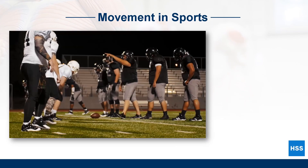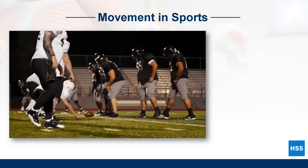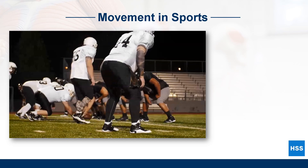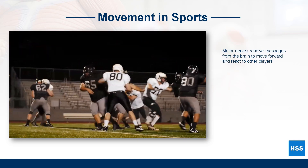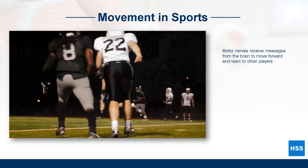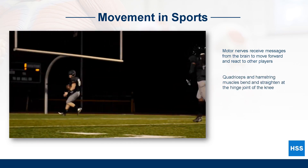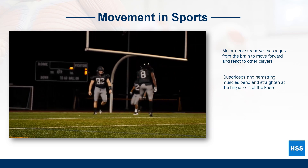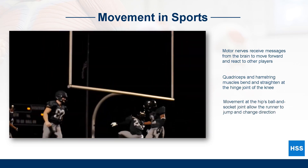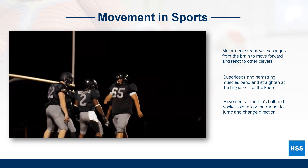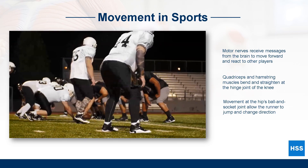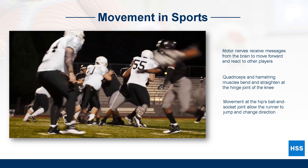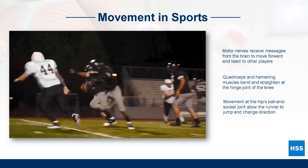Watch this football player and think about the messages that his brain is sending through his nerves to his muscles to move his joints. His motor nerves are carrying messages from his brain to his muscles to quickly move forward and react to the movements of the other players. When he's running, his brain must communicate with the muscles in his legs to move the joints in his legs like his hips, knees, and ankles. The coordination of these movements allows the player to run and jump over the other players on his way to the end zone.